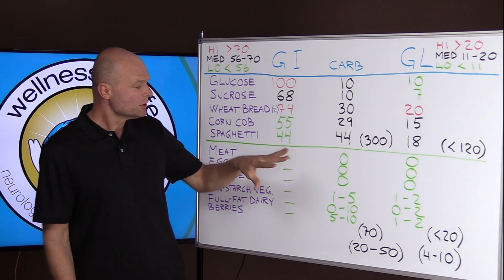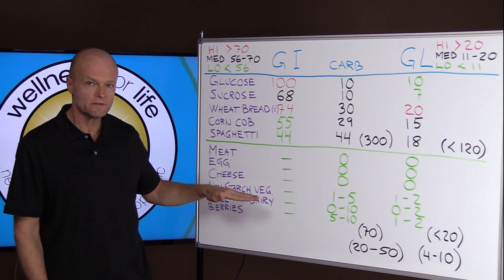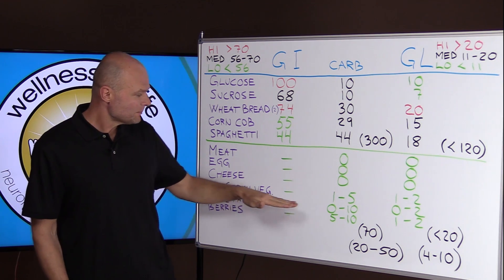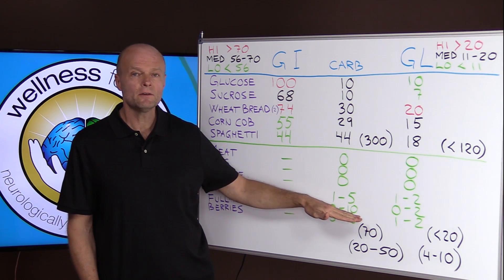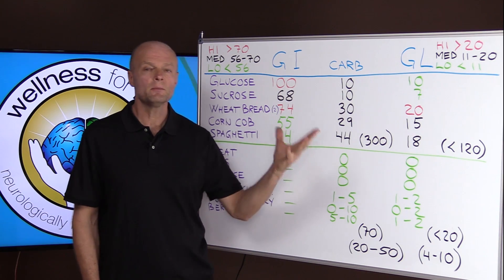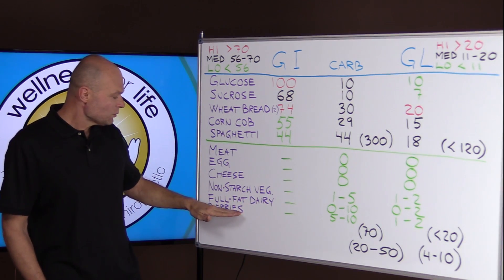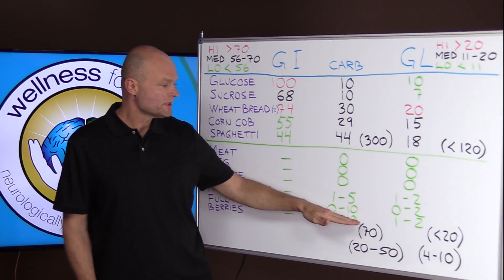And in a serving, you get anywhere from one to five grams of carbs from non-starchy vegetables. You get between zero and ten from dairy, depending on if it's butter or cream versus regular yogurt or milk. And with berries, you get five to ten grams.